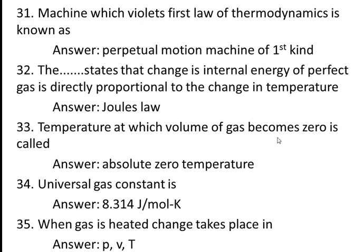Thirty-third question: the temperature at which the volume of a gas becomes zero is called absolute zero temperature. Thirty-fourth question: the universal gas constant is 8.314 joule per mole per kelvin. You can calculate this unit using the characteristic equation PV = nRT, where n is the number of moles.